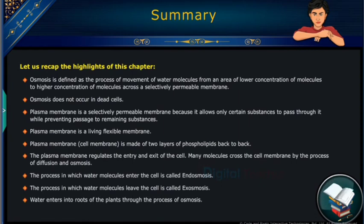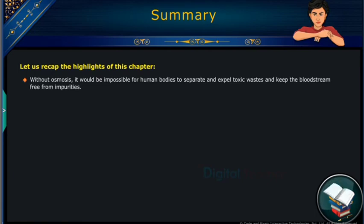Water enters into roots of the plants through the process of osmosis. Without osmosis, it would be impossible for human bodies to separate and expel toxic wastes and keep the bloodstream free from impurities.